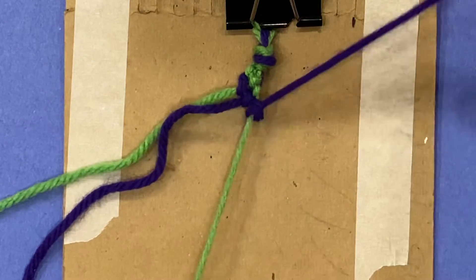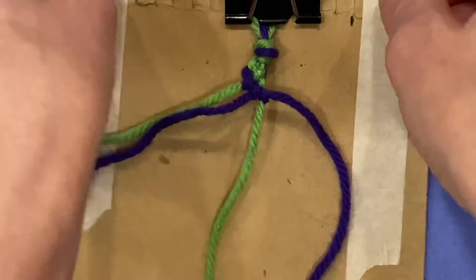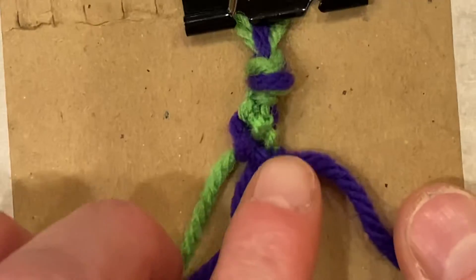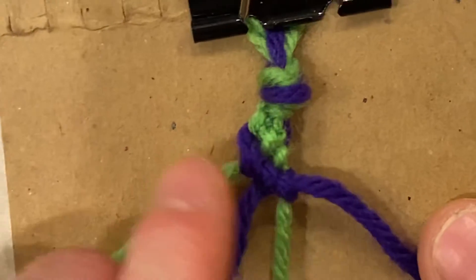So I'm going to just keep continuing this. And if you notice, the knots. I'm going to just take it up for a minute. The knots are starting to show like a stripe on a diagonal.